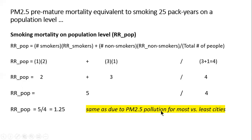When we translate the smoking risk ratio to a population level, it comes out to be the same as the risk ratio of premature mortality for air pollution in dirty versus least polluted cities. As Arden Pope said, this was an astounding result — quite shocking that the risk of dying due to particulate air pollution in a dirty city versus a clean city is the same as smoking 25 pack years of cigarettes on a population level. This calculation itself will not be on the exam, but I wanted to show you where it came from.